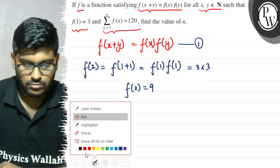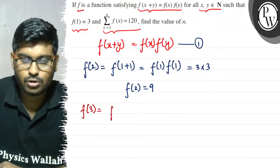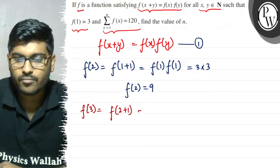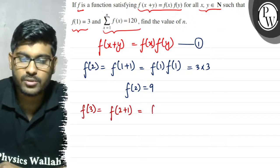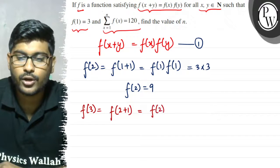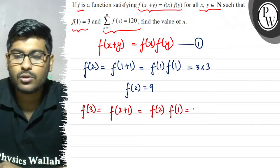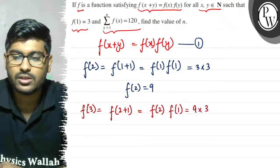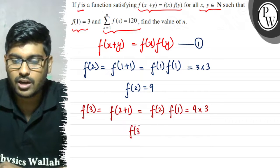If we want to write f(3), it will become f(2+1). Using the same equation, it will become f(2)·f(1). f(2) is equal to 9 and f(1) is equal to 3, so f(3) is equal to 27.